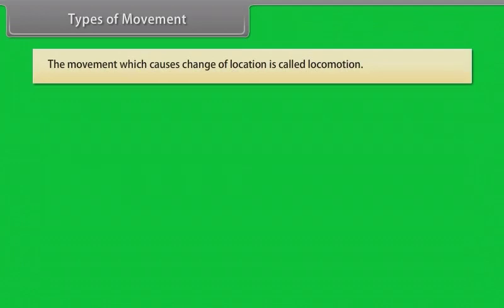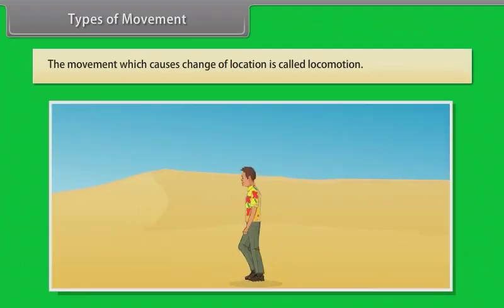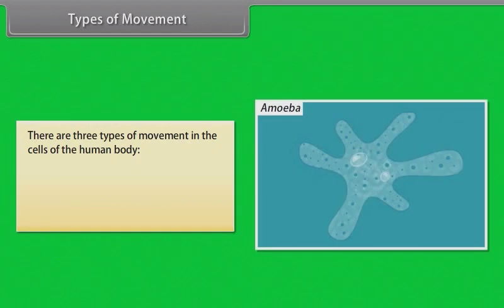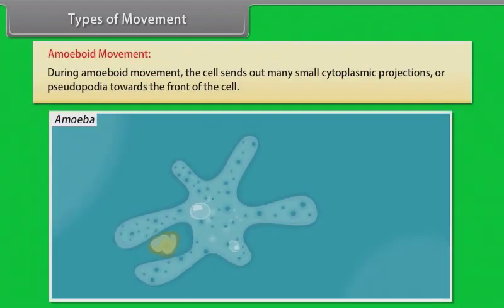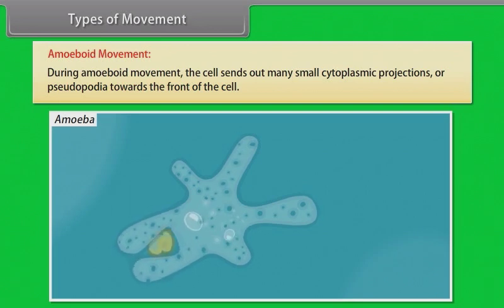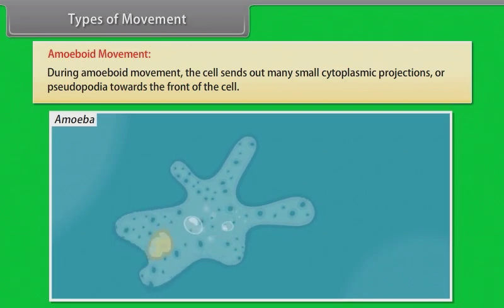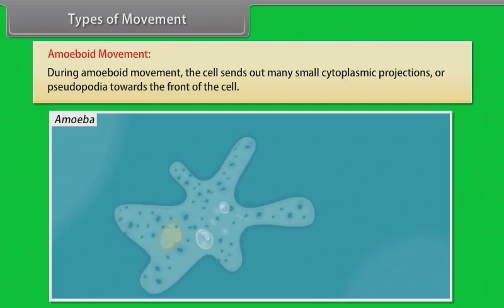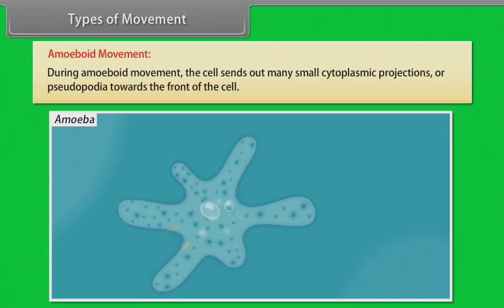Types of movement. The movement which causes change of location is called locomotion. There are three types of movements in the cells of the human body: amoeboid, ciliary, and muscular. During amoeboid movement, the cell sends out many small cytoplasmic projections or pseudopodia towards the front of the cell.